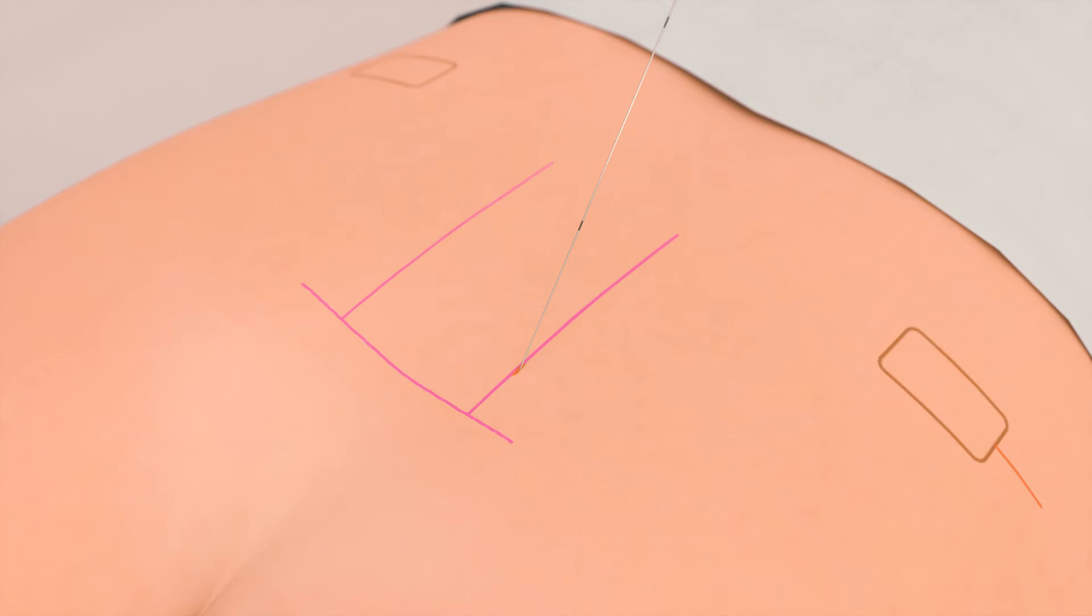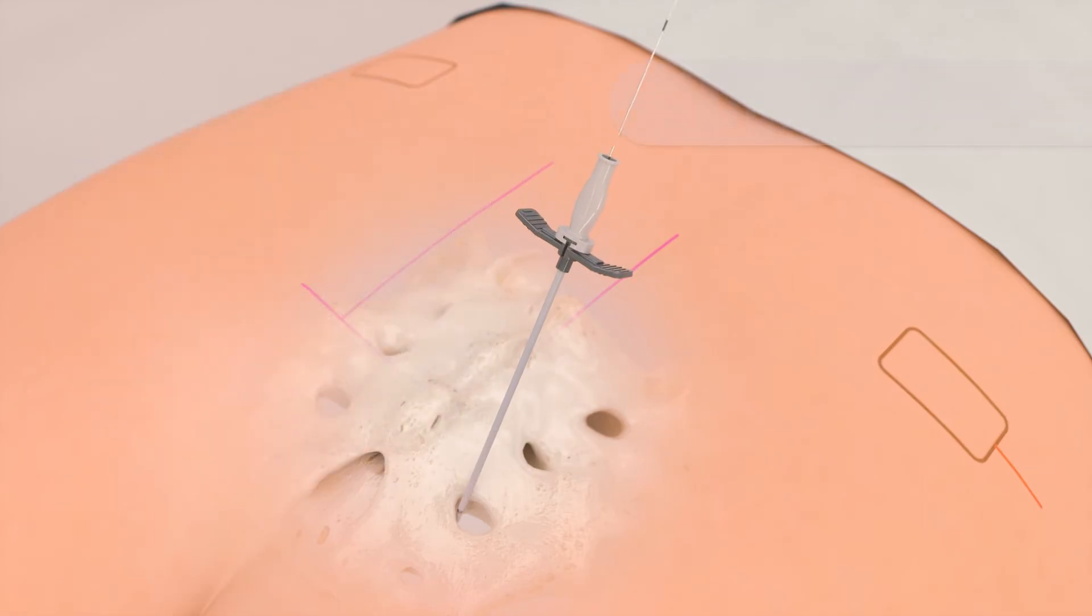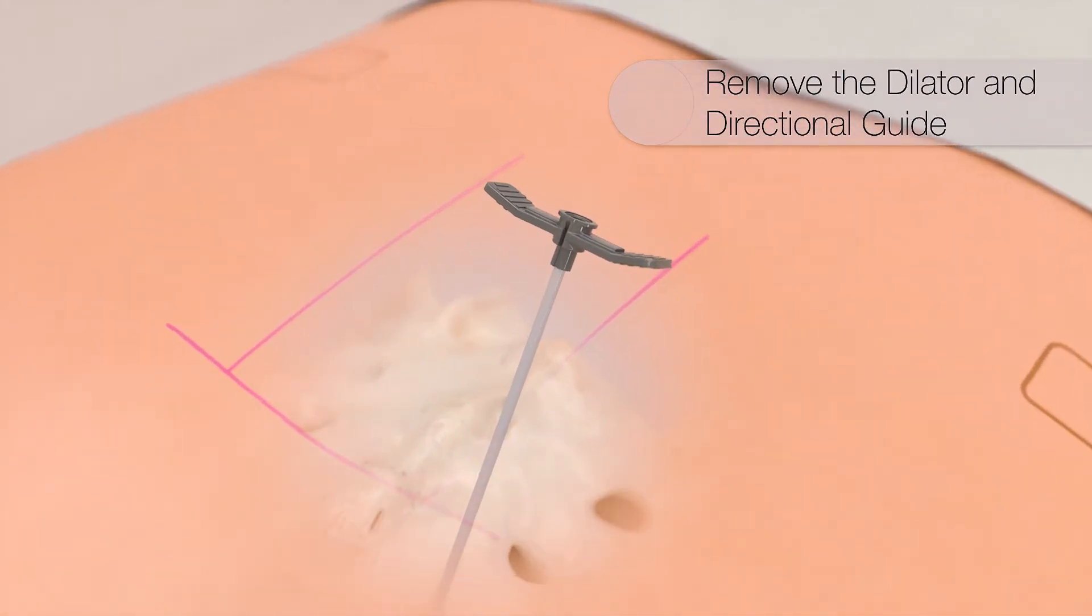Under live fluoroscopy, the introducer is carefully placed over the directional guide and inserted until the indicator is just halfway through the sacral plate. The dilator and directional guide are removed from the introducer's sheath.